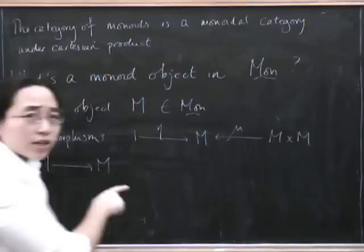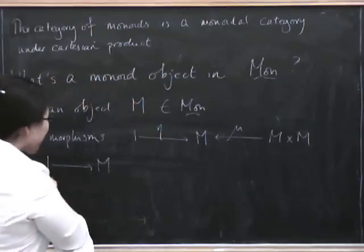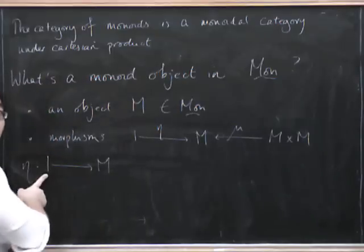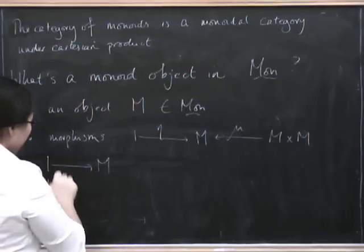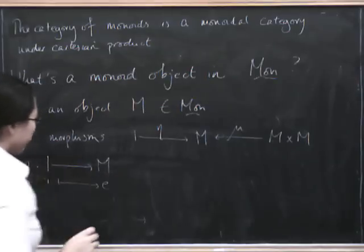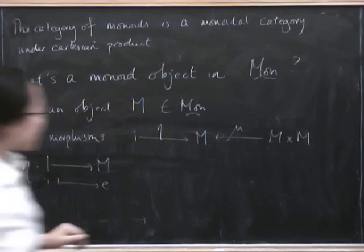But look, this has to be a monoid map, right? And the one object in this monoid here is, well, it's got to be the unit. So the unit has to go to the unit here. So all we can do is send our one object here to the unit of M. So this eta doesn't really give us anything.